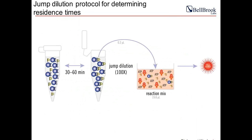This is a graphical representation of the jump dilution method. In a tube, you incubate your enzyme and inhibitor for 30 minutes, allowing the EI complex to form — most often via the induced fit or conformational model. Then jump dilute 100-fold into a 384-well plate containing 19.8 microliters of reaction mix. The reaction mix has excess ATP, acceptor substrates, and the Transcreener detection reagents. Mix the plate and put it in a plate reader — reading every five minutes — to monitor fluorescence change over time.